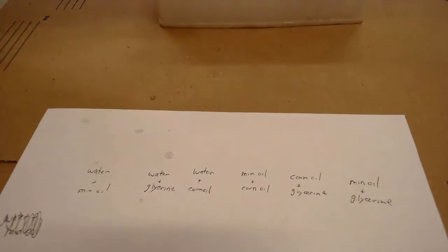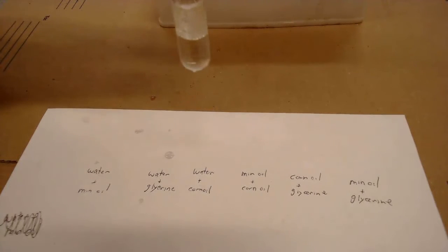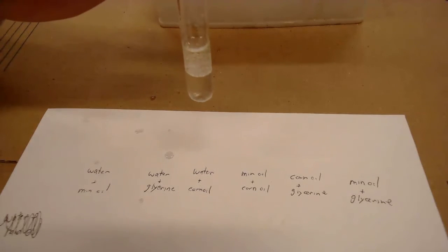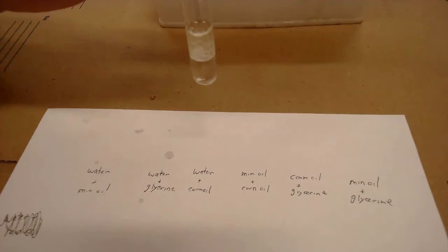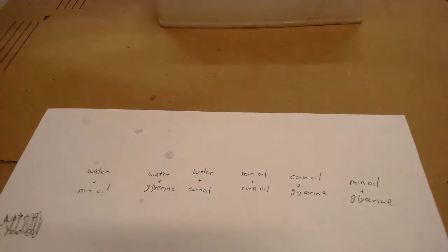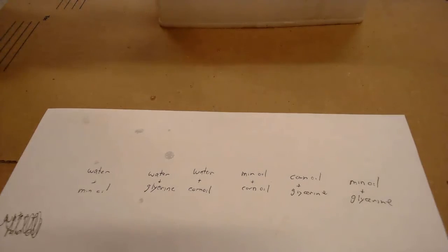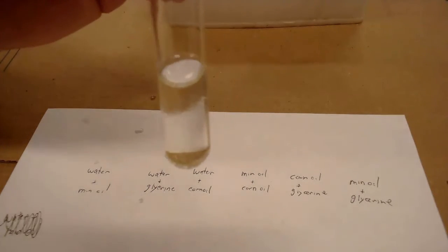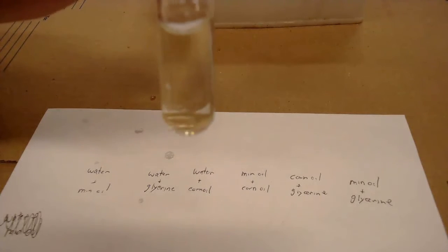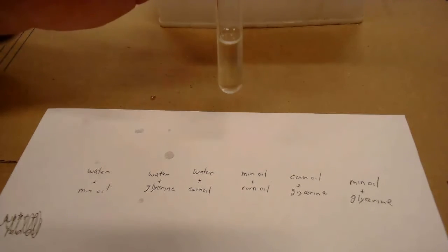The next one we have water and corn oil, and again, do you see that layer right in between them? They are not mixing. Our next one, mineral oil and corn oil — look at that, it all looks the same all the way through. There's no line. So the mineral oil and the corn oil mix.